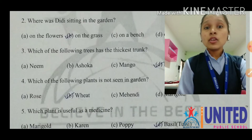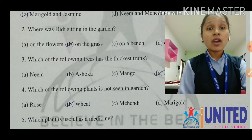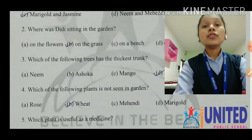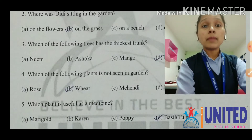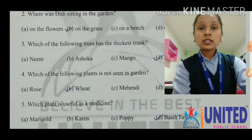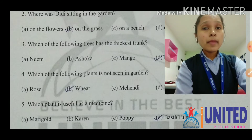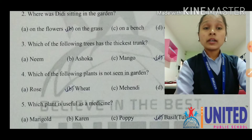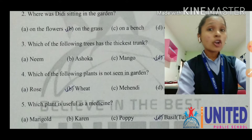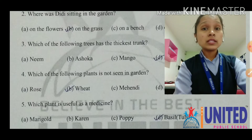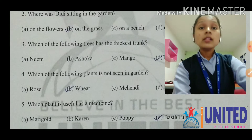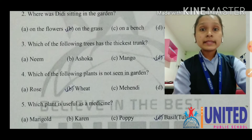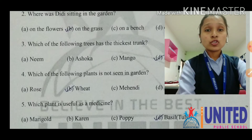Number five: which plant is useful as a medicine? Marigold, curren, and poppy are all flowers — they are not used as medicine. But tulsi, which is also called basil in English, is used as medicine. So basil is the answer. We have completed question number one.